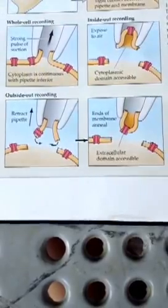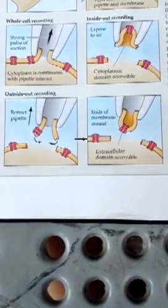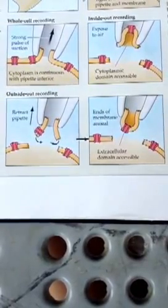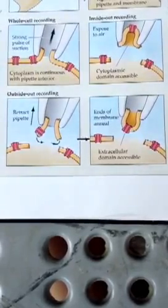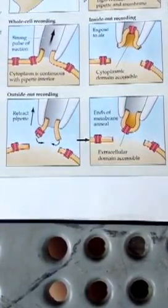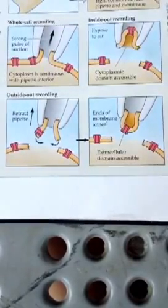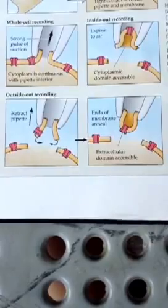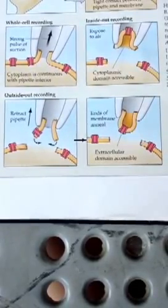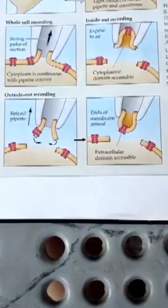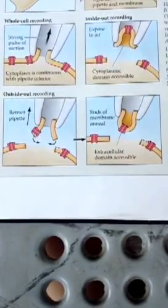For an outside-out recording, the electrode is slowly withdrawn from the cell, allowing a bulb of membrane to bulge irregularly out from the cell. If the pipette is pulled far enough, the bulge detaches from the cell and reforms as a convex membrane on the end of the electrode. The original outside of the membrane is facing outward from the electrode. This configuration helps aid the study of how channel activity is influenced by extracellular chemical signals such as neurotransmitters.